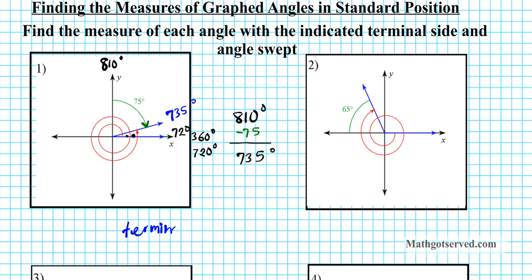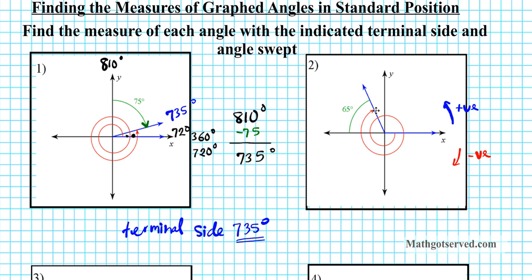The terminal side is at 735 degrees. Now let's take a look at question number 2. In question 2 we have a rotation going downwards. When you rotate upwards as in problem number 1, that is a positive angular direction. But if you rotate in the clockwise direction, that is negative. You have to pay attention to the direction of the spiral when determining the value of the angular measure of your terminal side.